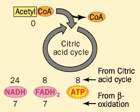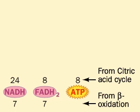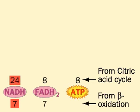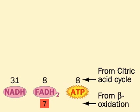Let's add them up. NADH from beta-oxidation: seven; and from the citric acid cycle: 24 — or 31 total. FADH2 from beta-oxidation: seven; and from the citric acid cycle: eight — or 15 total.